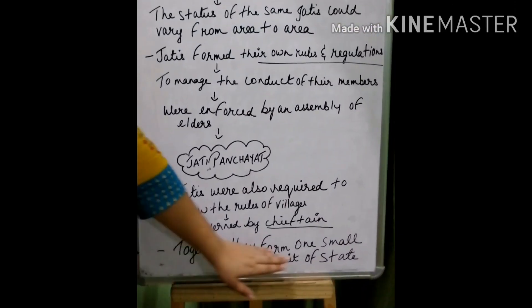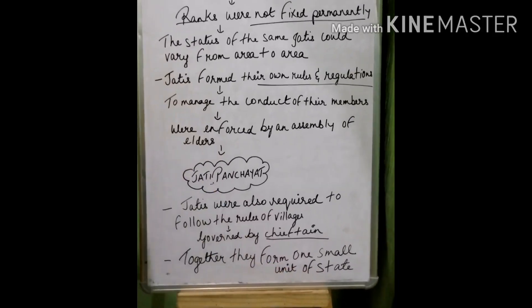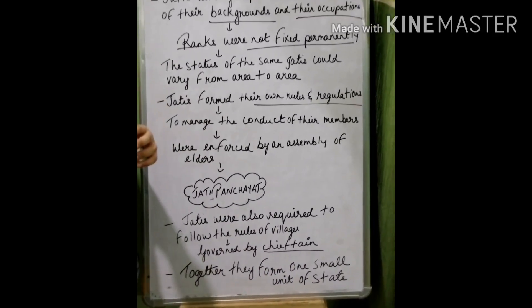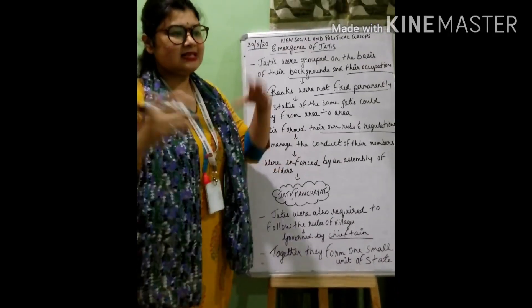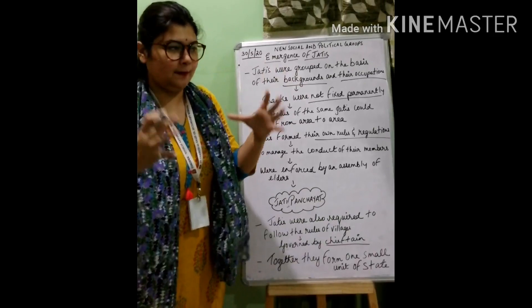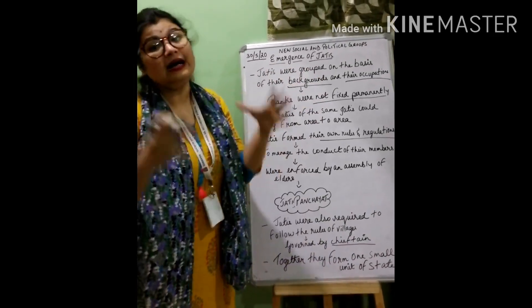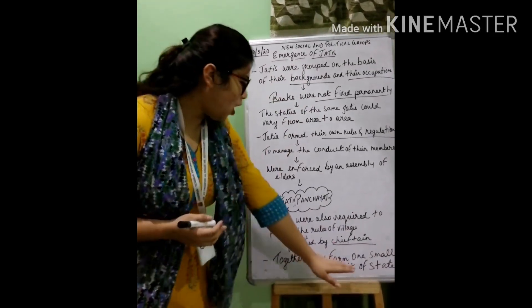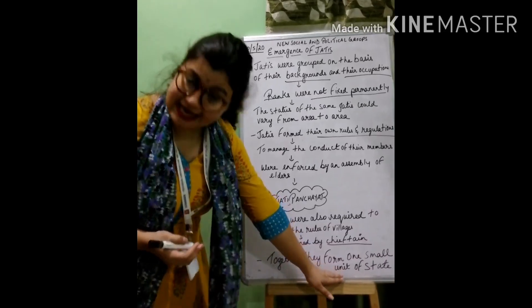If they faced any problem, they would go to the jati panchayat, which would further discuss the problem with the village authority or the chieftain. Together, they formed one small unit of state — the people of the subcaste together formed a small unit of state.